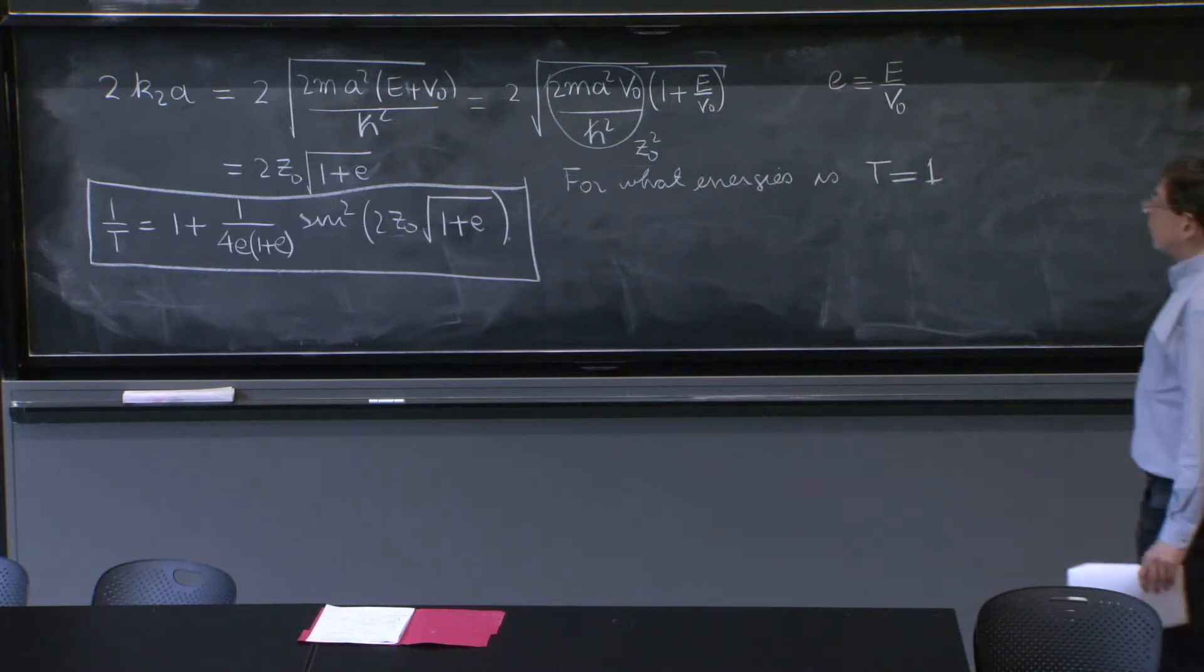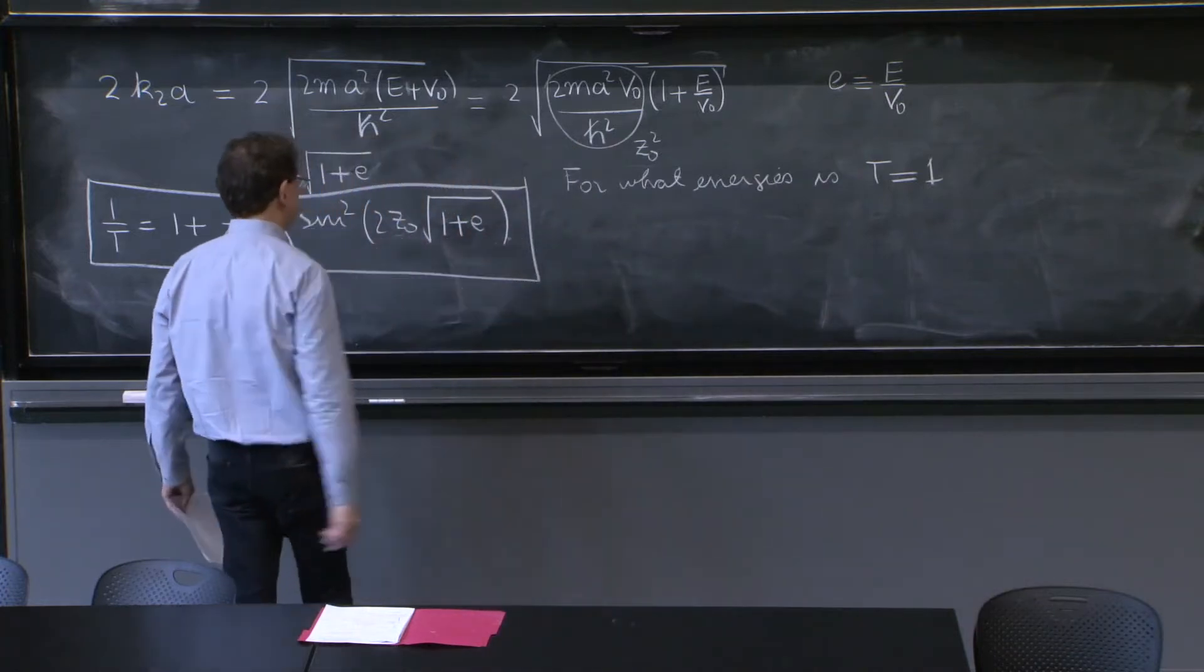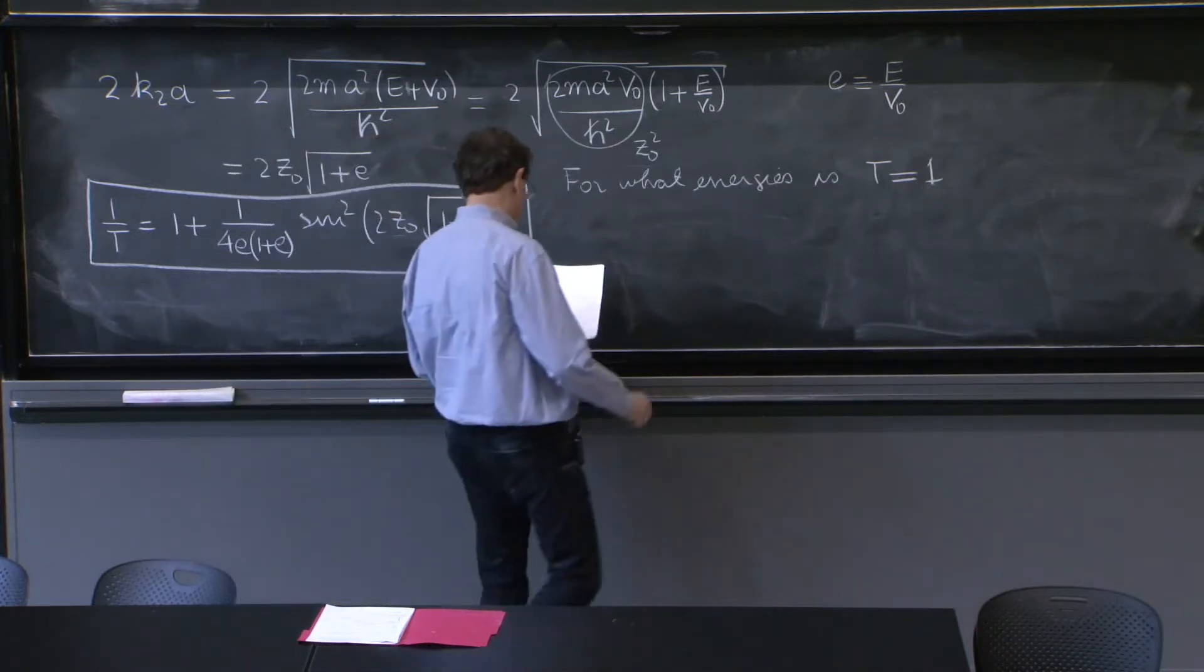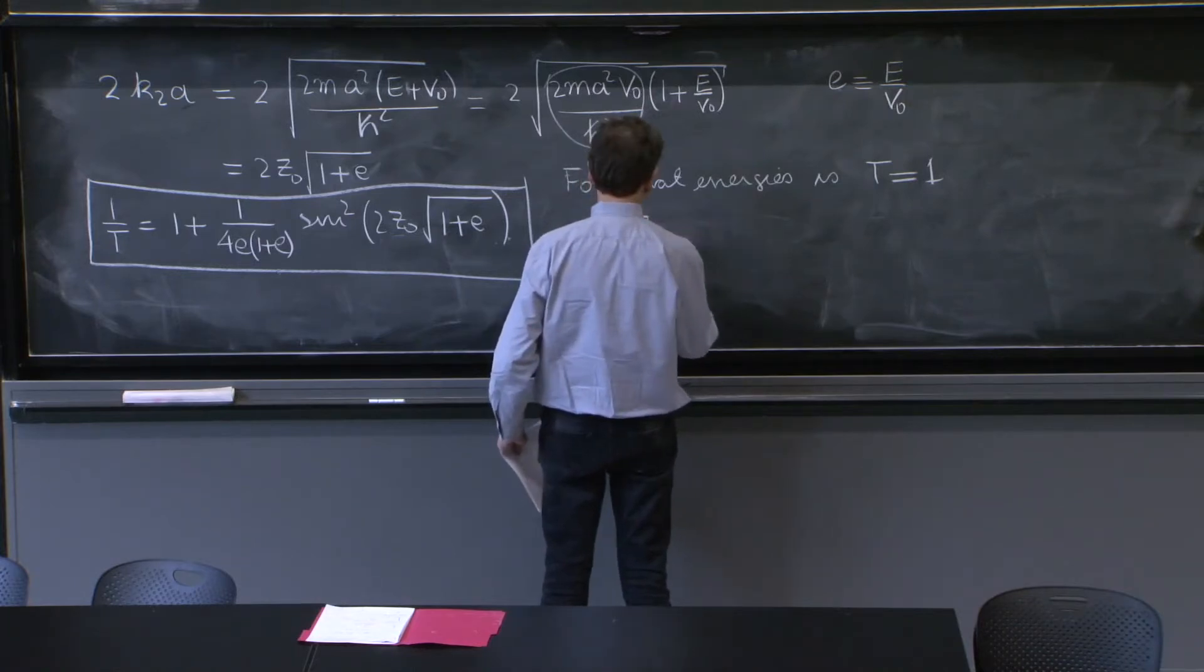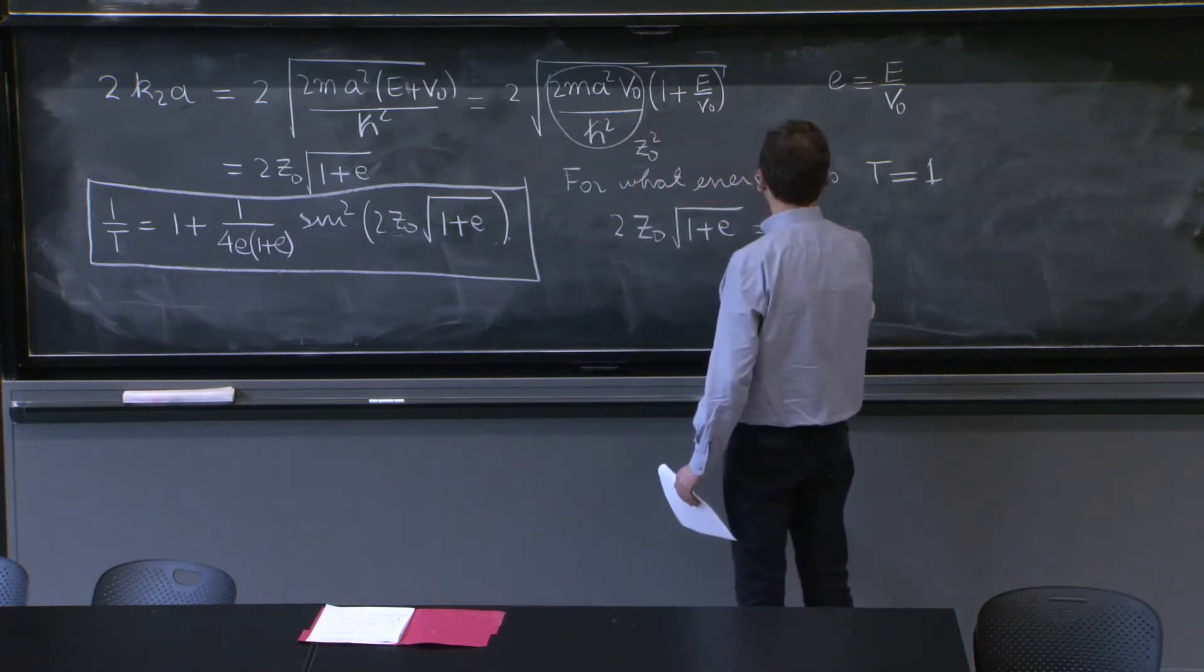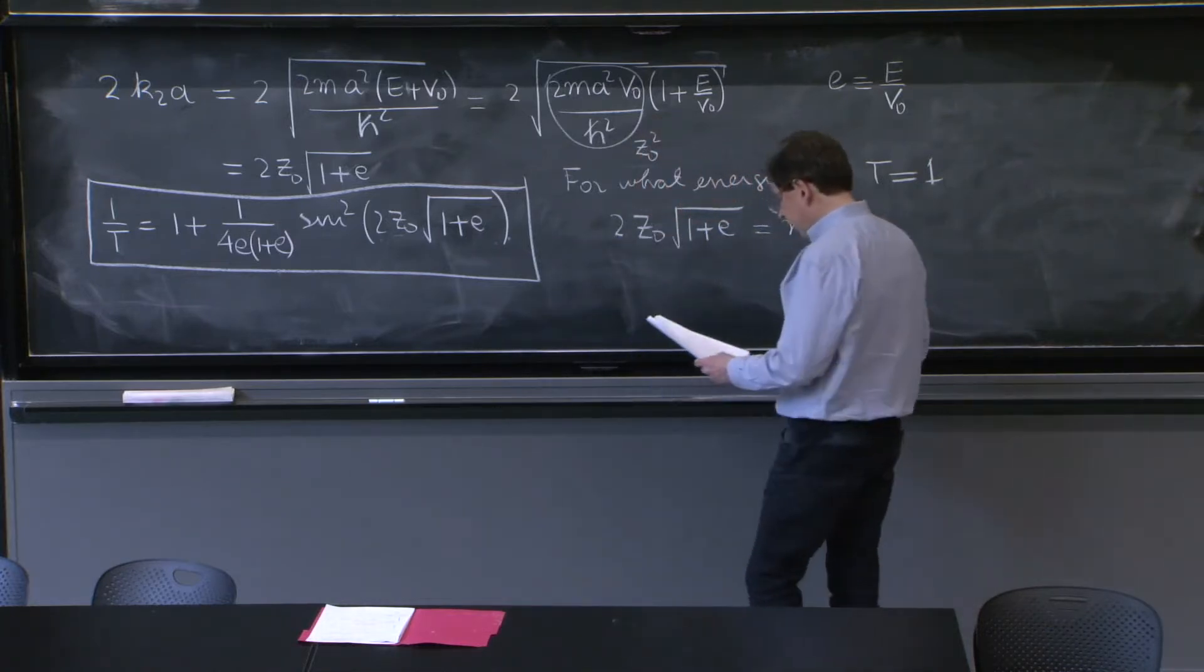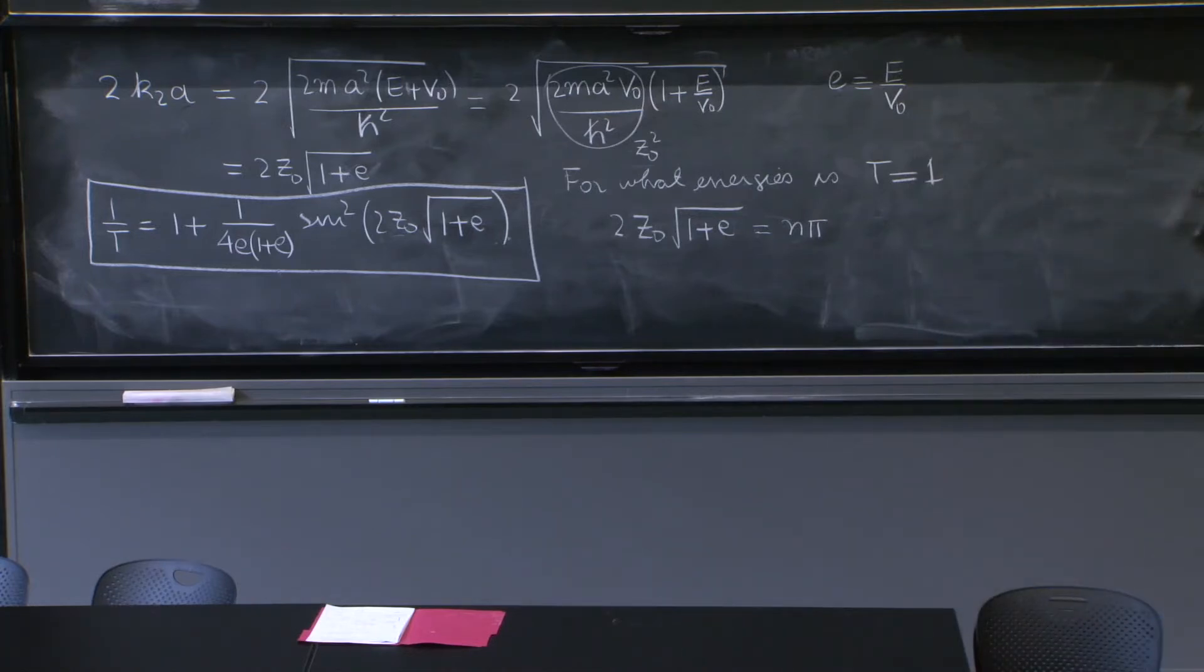It's perfect transmission. No reflection, no reflection whatsoever. So we need, then, that the argument of this sine function be equal to a multiple of pi. 2z0 square root of 1 plus e is equal to a multiple of pi.